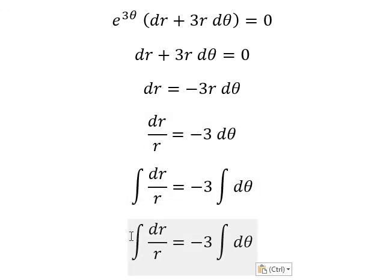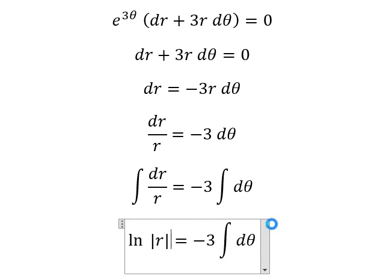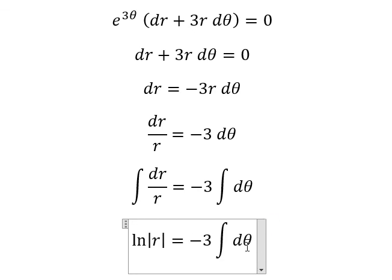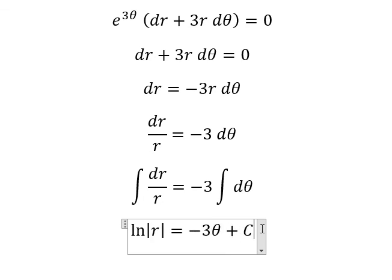So this gives us Ln of the absolute value of R on one side, and theta on the other side. I will add the constant C. This is the end — thank you for watching.